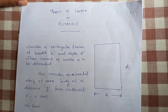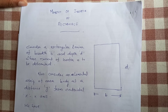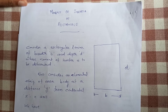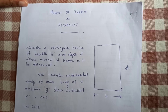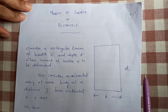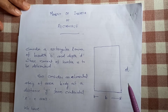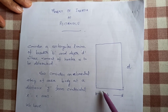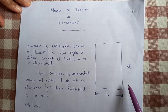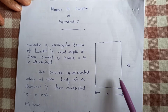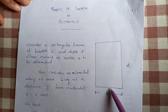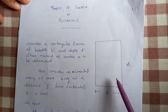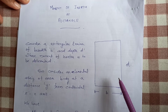First, let's start with the basics — the moment of inertia of a rectangle. Consider a rectangular lamina of breadth B and depth D. The moment of inertia will be the resistance to rotation.